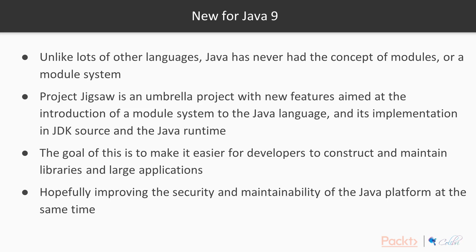So what is Project Jigsaw? This is the meat and potatoes of this course — it's probably the biggest new thing for Java 9. Unlike lots of other languages, Java has never had the concept of modules, or any kind of module system. Project Jigsaw is an umbrella project with new features aimed at the introduction of a module system to the Java language and its implementation in JDK source and the Java runtime. The goal is to make it easier for developers to construct and maintain libraries and large applications, improving the security and maintainability of the Java platform.